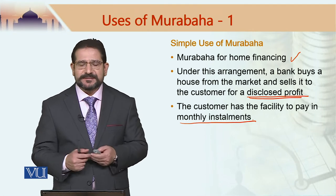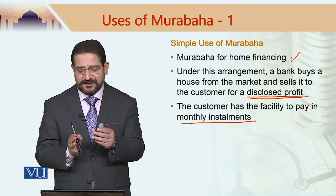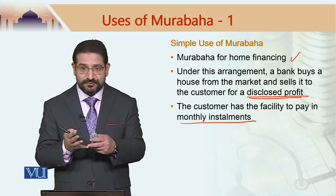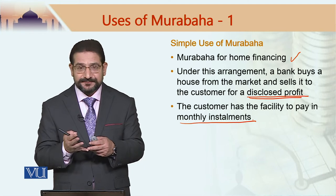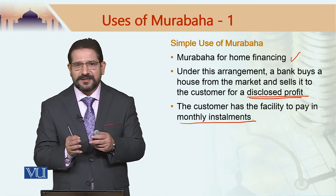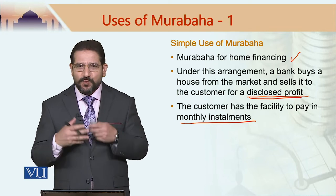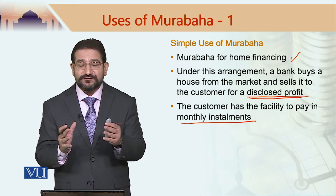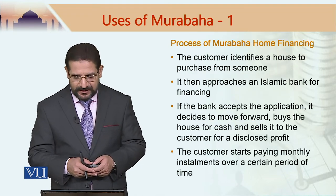In this case the murabaha is on credit. There are two characteristics: it is murabaha with disclosed profit and it has features of baya muajjal. This is what we have been emphasizing — Islamic modes of financing may not be just one contract. The way they are used in Islamic banking and finance, they are a combination of many arrangements, and the use of murabaha is no exception.